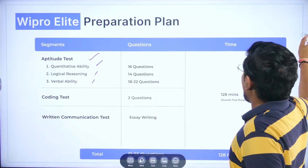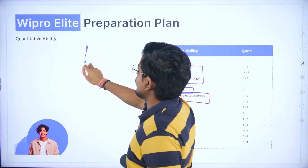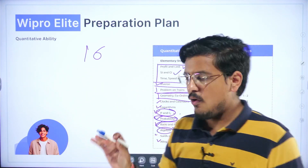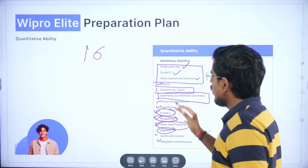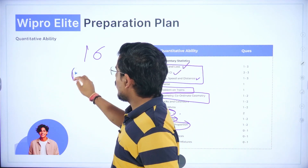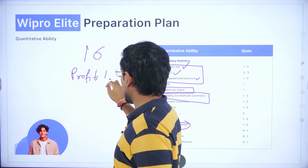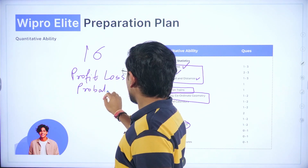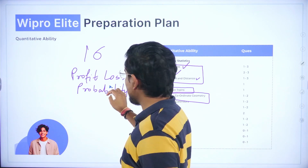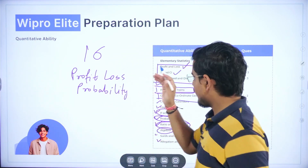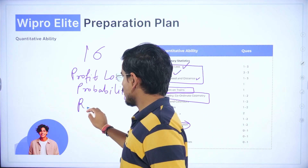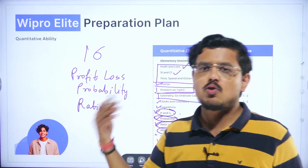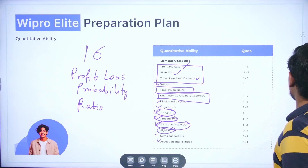In quantitative aptitude, there are 16 questions. When solving in the actual exam, always pick up profit and loss first if you have practiced them well, along with probability questions and ratio questions. Pick them first while solving — that is very, very important. These are very easy to solve and will take very less time. This will give you momentum. Then you can solve the other questions.